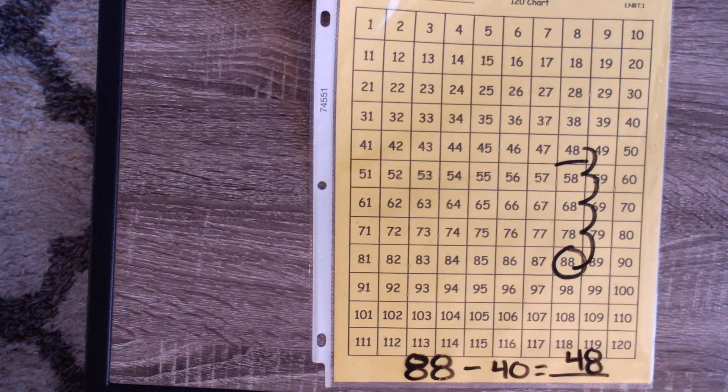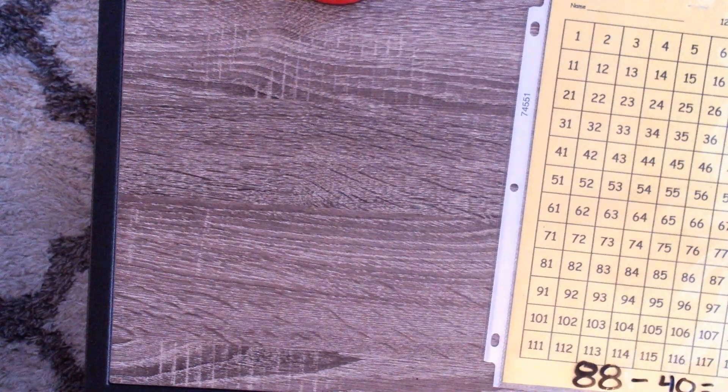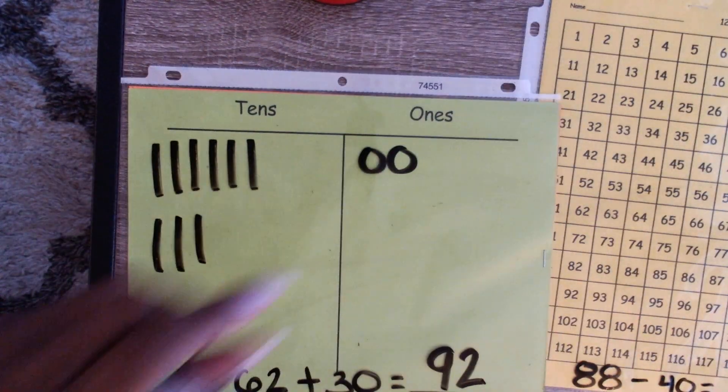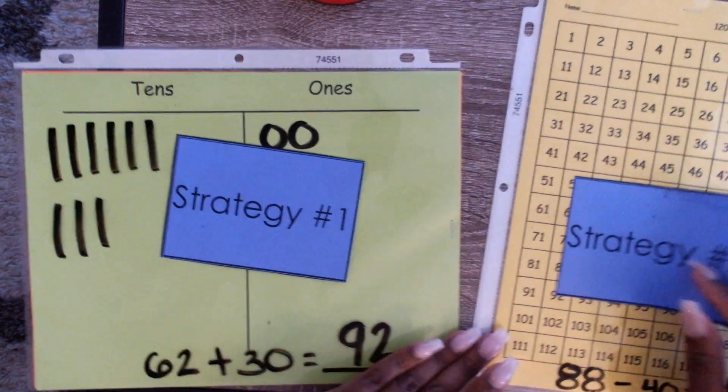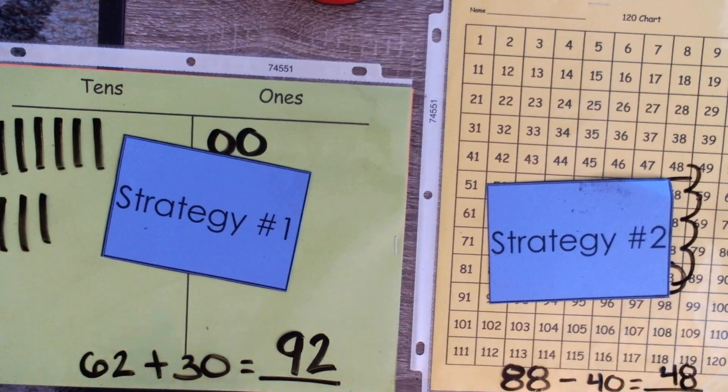Alright guys, that's all I have for you today. We practiced two strategies today. We practiced strategy number one, which was using our tens and ones chart, and we practiced strategy number two, which was using a 120s chart. I'll see you guys next time.